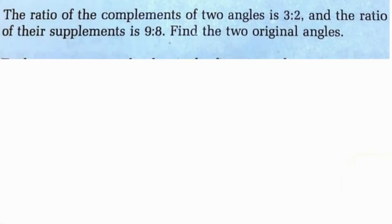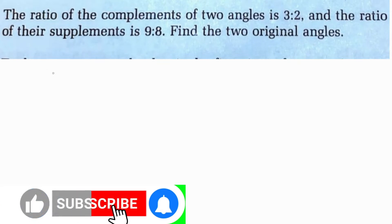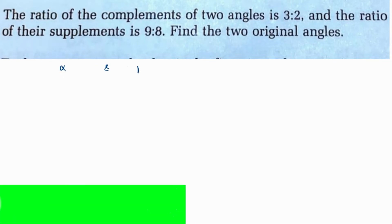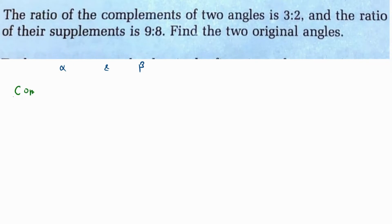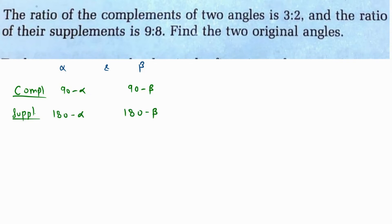The ratio of the complements of two angles is 3 to 2, and the ratio of their supplements is 9 to 8. Let's call the two angles alpha and beta. The complement of an angle is found by subtracting it from 90, so the complements are 90 minus alpha and 90 minus beta. The supplements are 180 minus alpha and 180 minus beta.